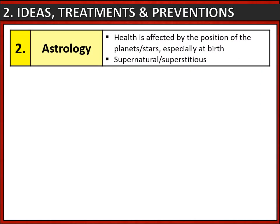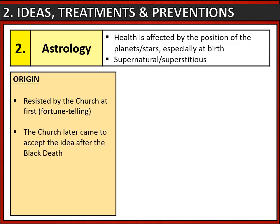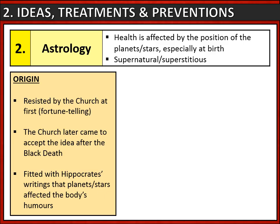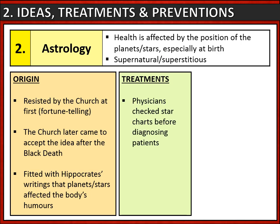Another idea at the time was astrology — the belief that your health might be affected by the position of the planets and the stars, especially at the moment you were born. Initially the church resisted it because it seemed like fortune telling, which went against the Bible, but later the church came to accept and even encourage it after the Black Death. It also fitted in with Hippocrates' writings; he had written that the planets and stars affected the body's humours. This belief had an important impact on treatment: physicians checked star charts as part of diagnosing their patients, using the position of the planets and stars at the patient's birth to help choose the correct treatment.